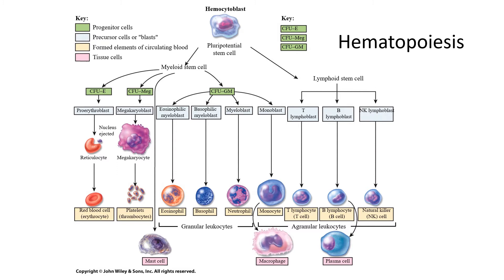The key things to know: red blood cells fill up with hemoglobin and then spit out their nucleus. Hemocytoblasts are the pluripotent stem cells that give rise to all our specialized blood cells. The specialized mature cells — like basophils and B lymphocytes — wear out and need to be replaced, but they don't divide by mitosis; the stem cells do. Hemocytoblasts make up about one in every 10,000 cells in bone marrow. When they divide by mitosis, one cell remains as a stem cell and the other starts to specialize.